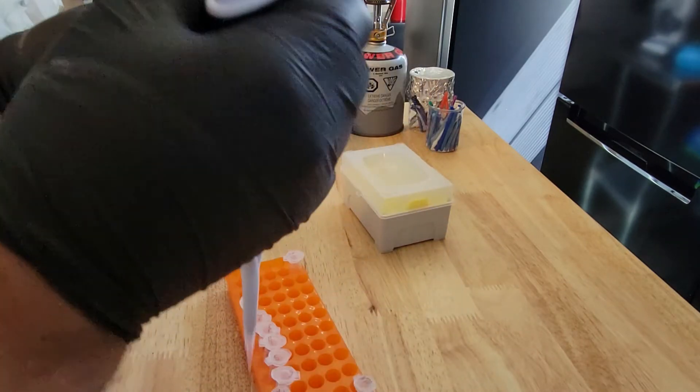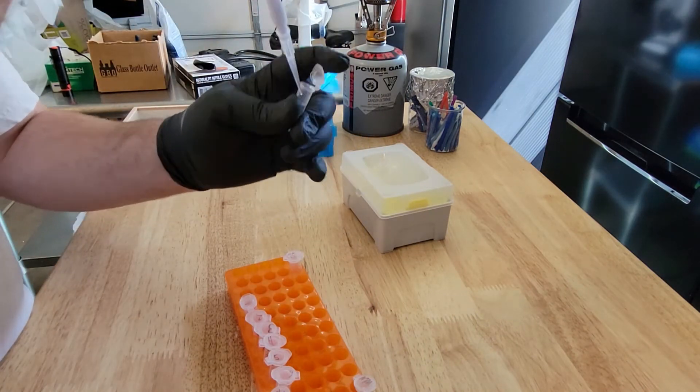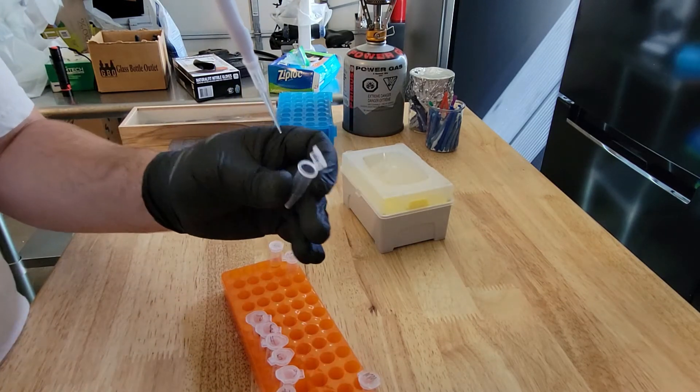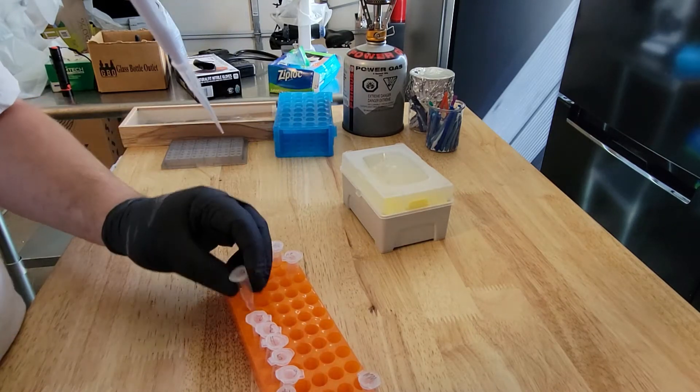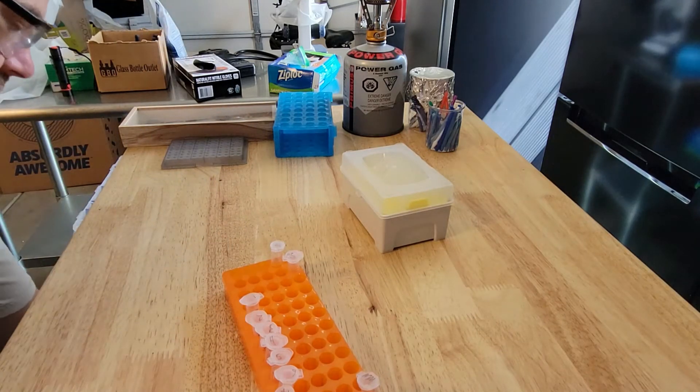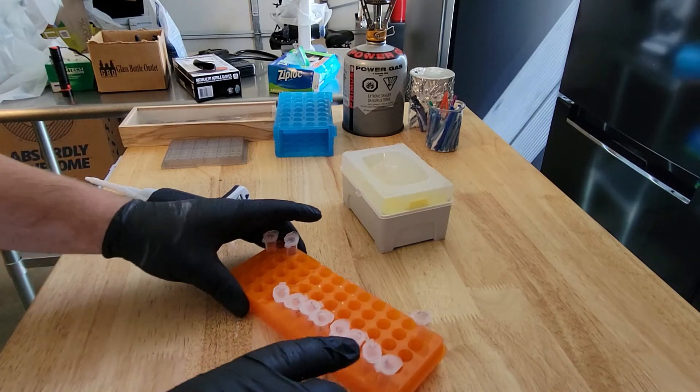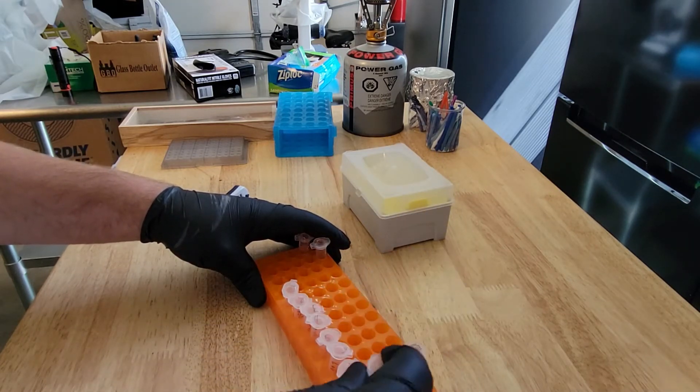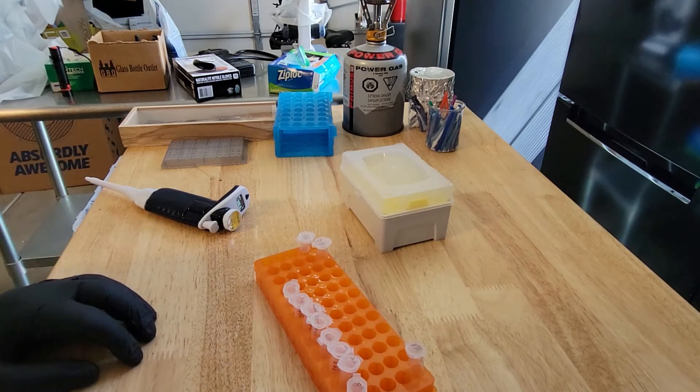100 microliters. I'm going to pipette that into the tube and do that for all the samples. I have seven of them. And then one, number eight, is going to be a negative control. So I'm not going to add any mushrooms to number eight, only the extraction buffer and other chemicals.